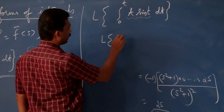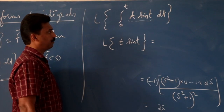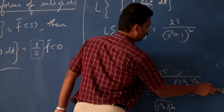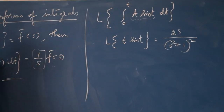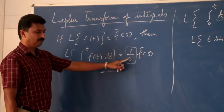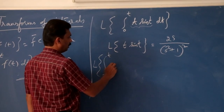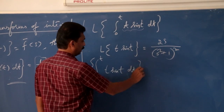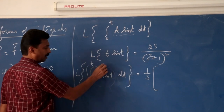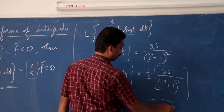So the Laplace transform of t·sin t is equal to 2s divided by (s² + 1)². Therefore, using the integral property, the Laplace transform of the integral from 0 to t of t·sin t dt equals (1/s) times 2s/(s² + 1)², which simplifies to 2/(s² + 1)². This is the final answer.